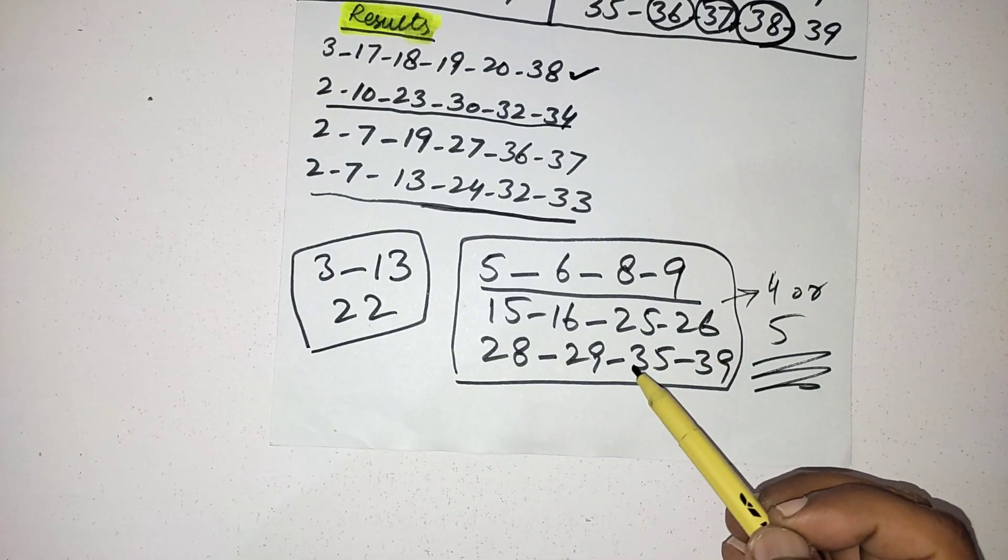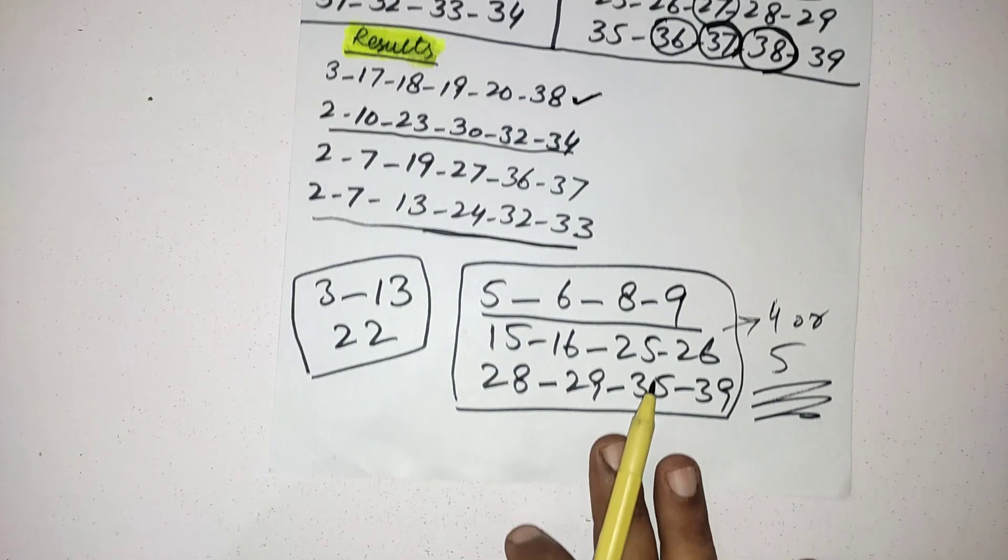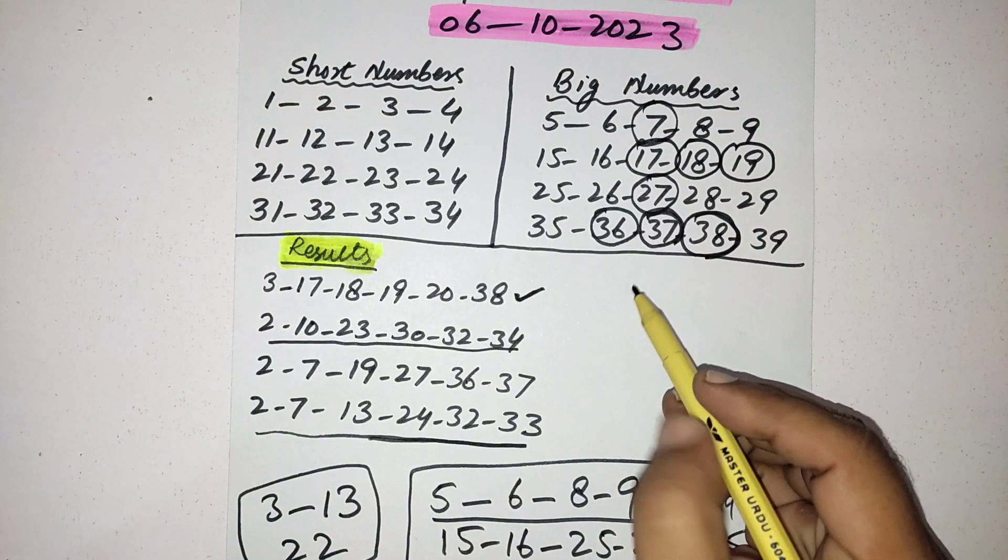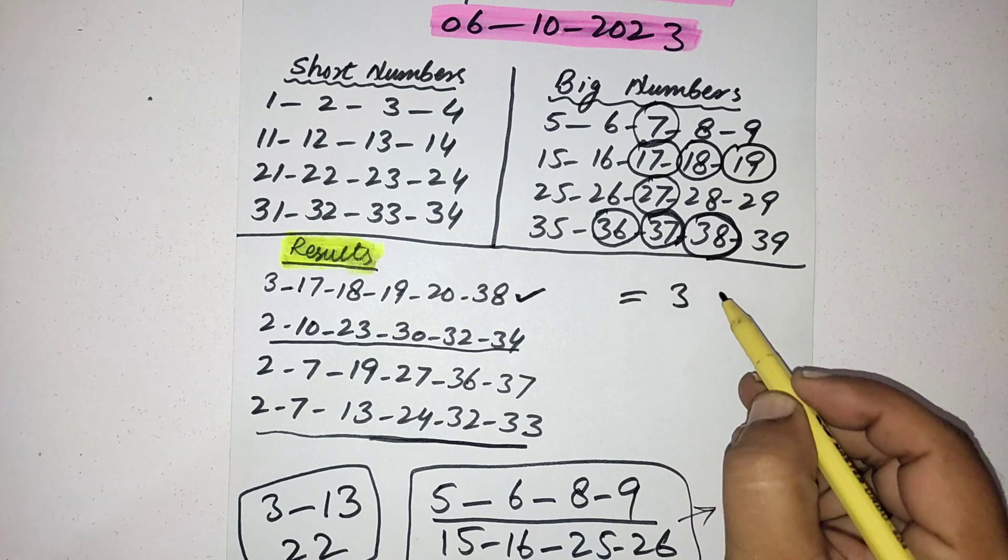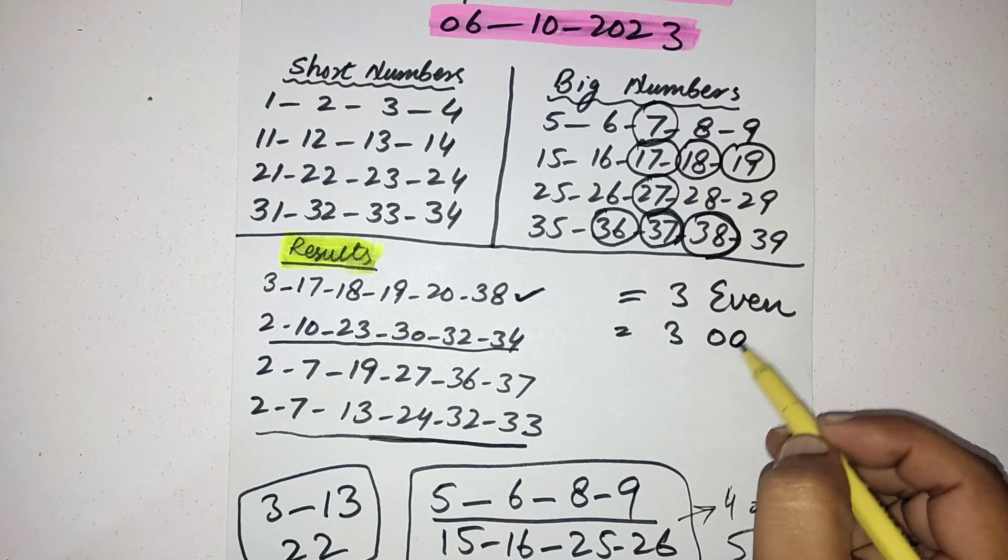And 4 or 5 numbers from these big numbers. This is the best technique to find the best numbers for any lottery. For this draw you should select 3 even numbers and 3 odd numbers.